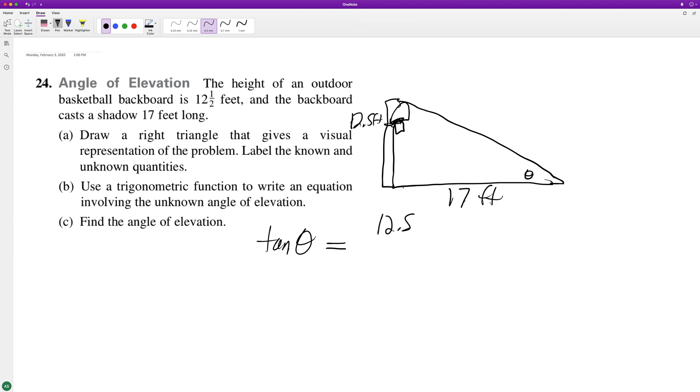The units become unitless. For part C, theta, the angle of elevation, is equal to arctangent of 12.5 divided by 17.